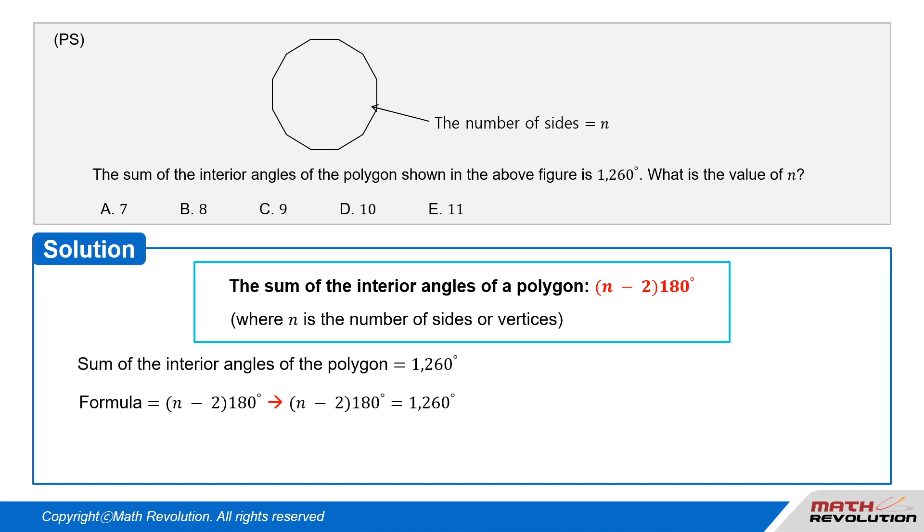we obtain (N - 2) × 180 = 1260 degrees. Solving for N, we obtain N - 2 = 1260 degrees ÷ 180 degrees = 7. That is, N = 9.